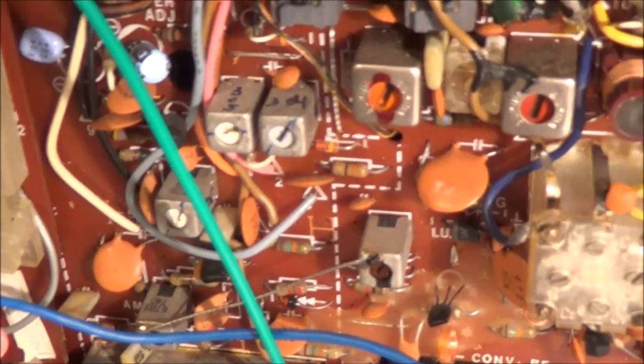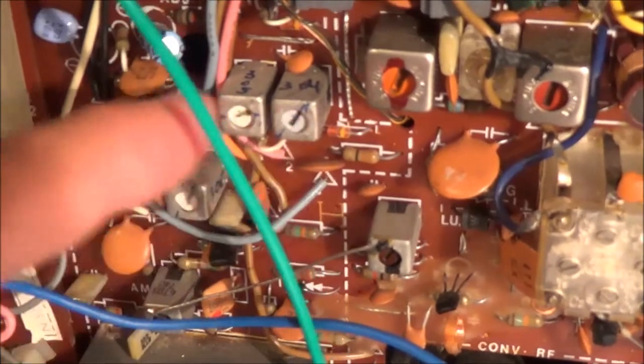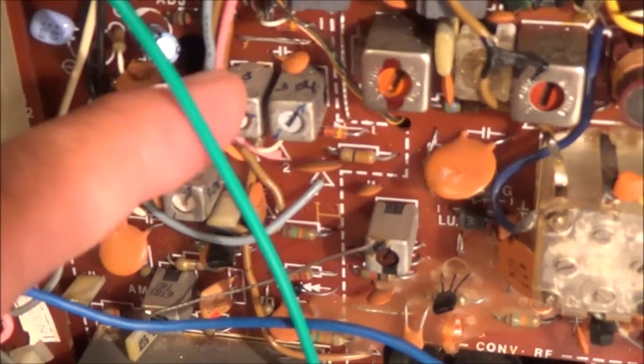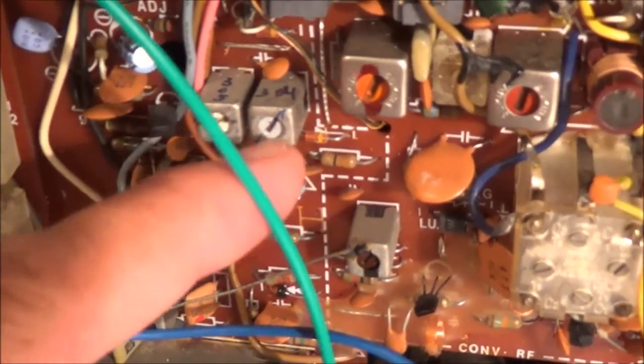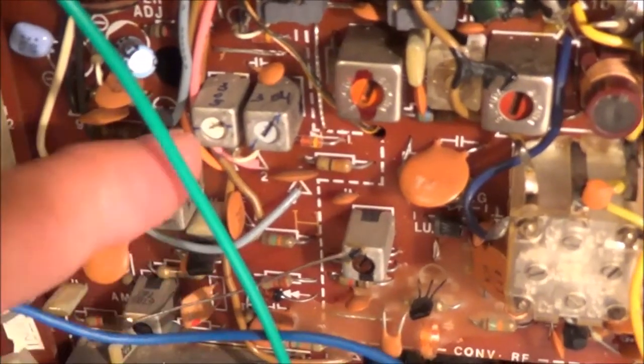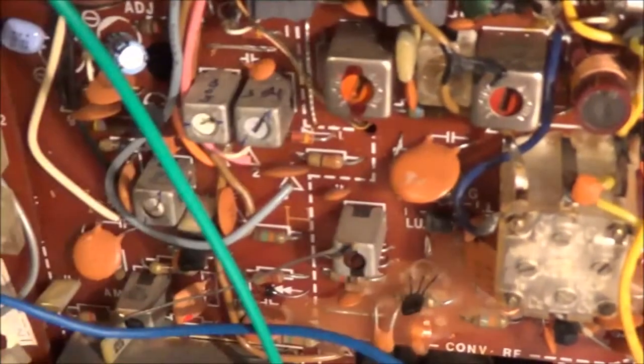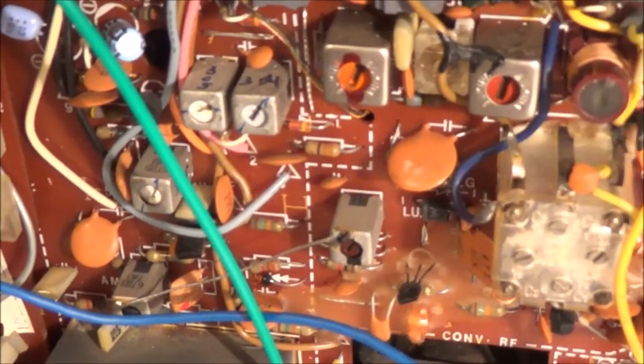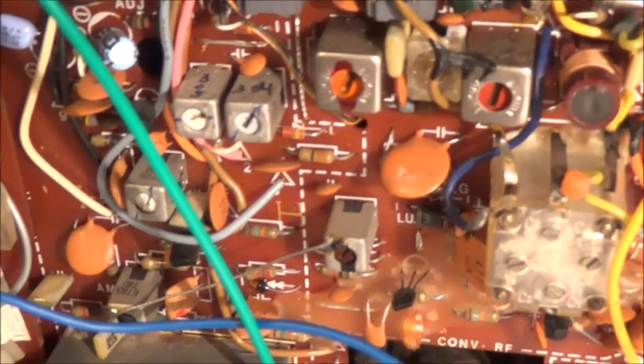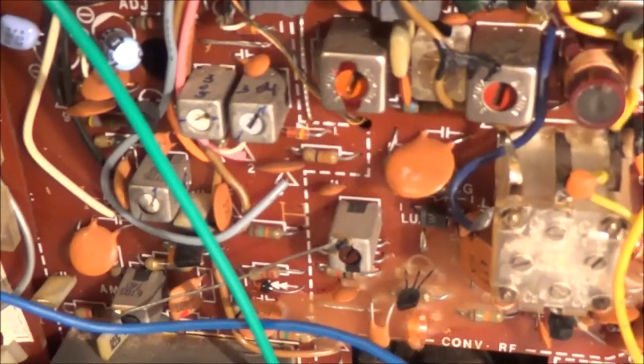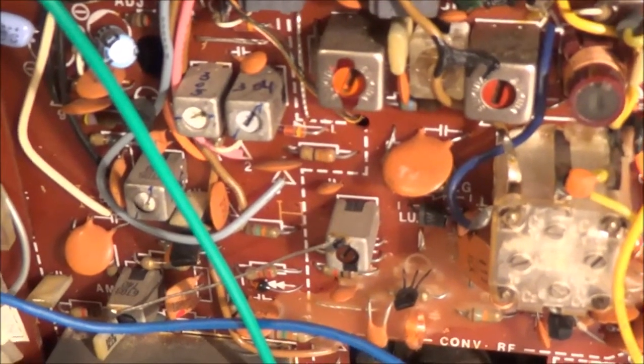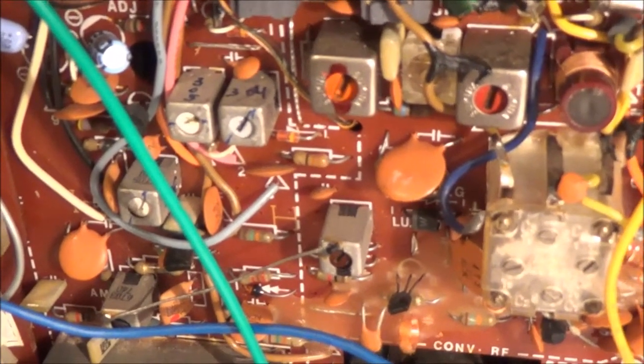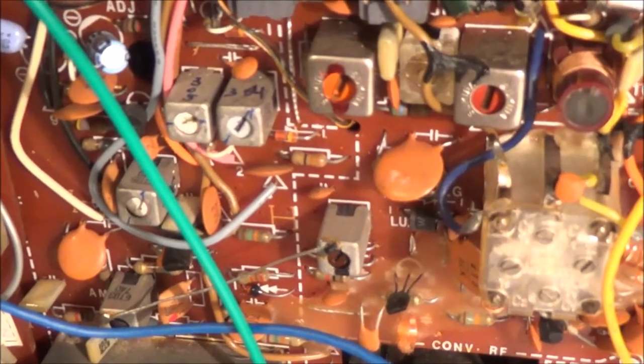So I marked all of the transformers so I know which the original positions were. I had to figure out in the service manual where they were at on the board, so I got them marked here. There's actually four of them for the IF adjustment. I'm going to start with the lowest one first and work my way up to the last one.